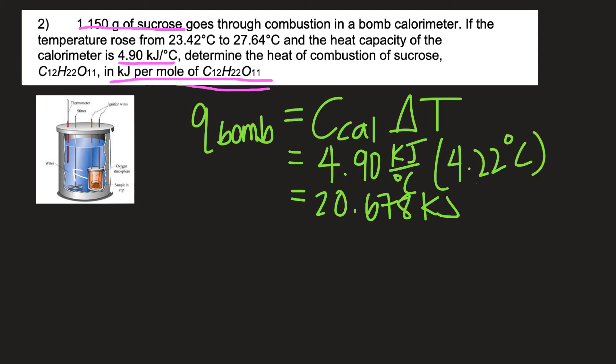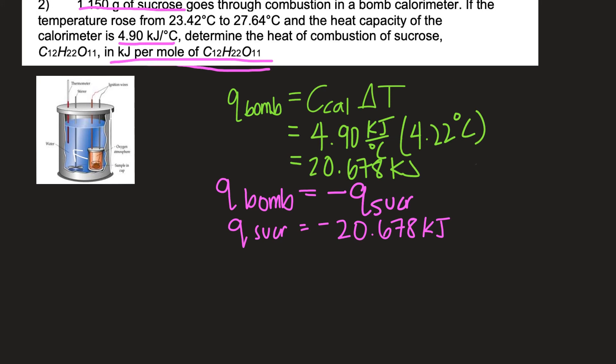I just substituted in my values for the calorimeter constant and the change in temperature and it looks like the bomb absorbed about 20.7 kilojoules of energy. In order to relate the energy gained by the bomb to the energy released by the sugar it's just the opposite so you can see we just put a negative sign in and now we know the amount of energy released by the sugar.